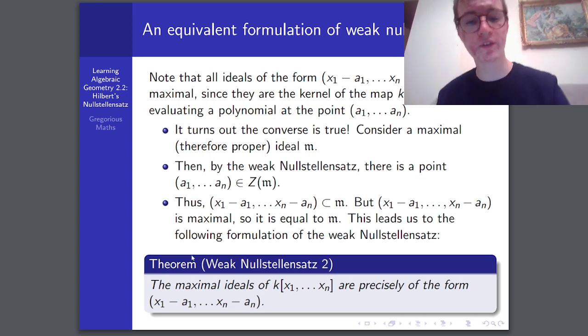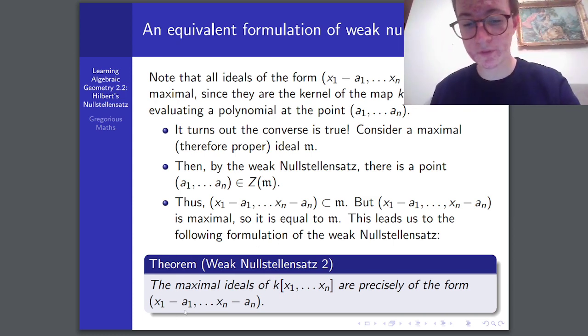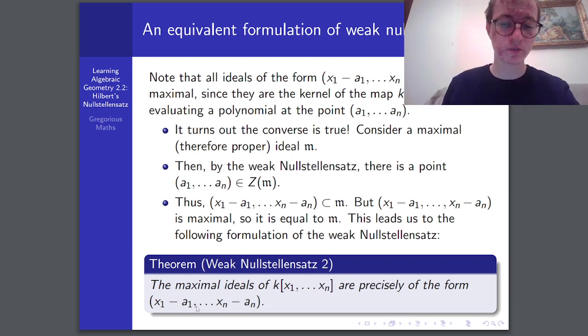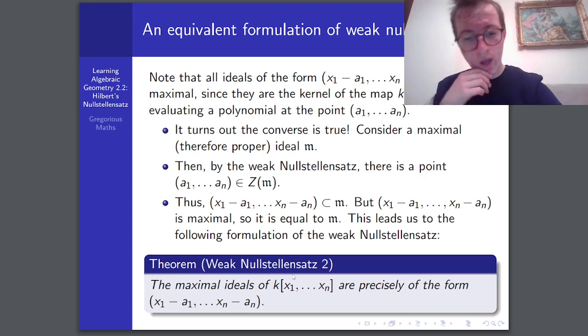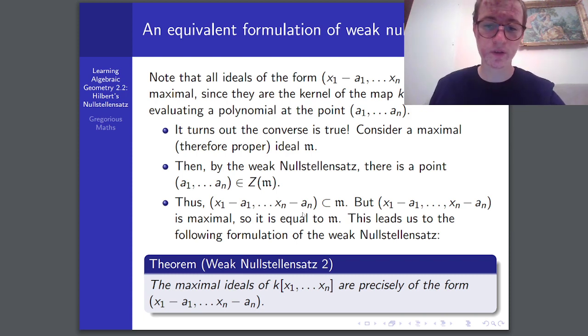And, therefore, weak Nullstellensatz 2, which is actually equivalent, if you do a little bit more work in the converse direction, to weak Nullstellensatz 1, states that the maximal ideals of this polynomial ring are precisely of this form. So, we have a maximal ideal of this polynomial ring, if and only if it is of the form x1 minus a1, etc. And that's about all I have to say about the Nullstellensatz.